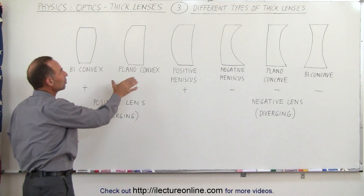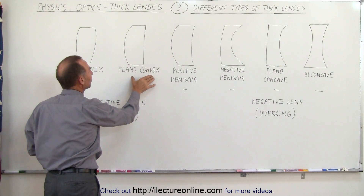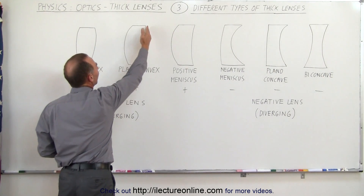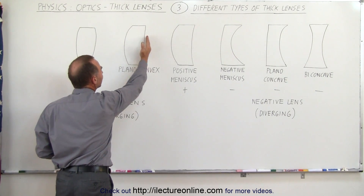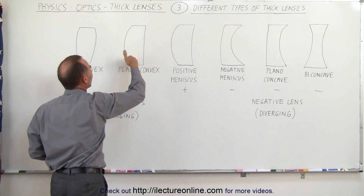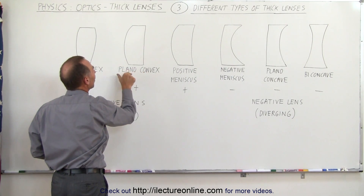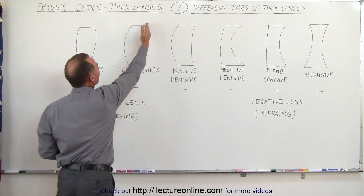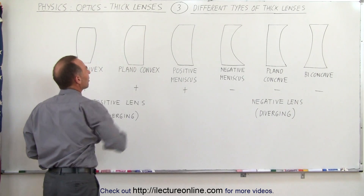Here we have something called the plano-convex lens because on one side it's a straight line or plane, and on the other side it's convex. So plano-convex means one side is flat and the other side is convex.